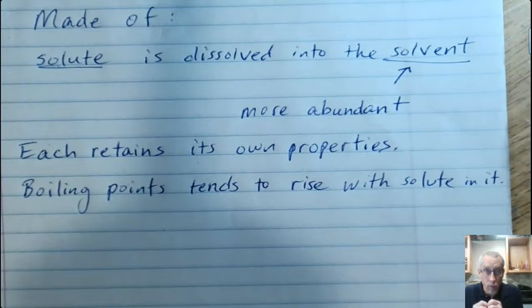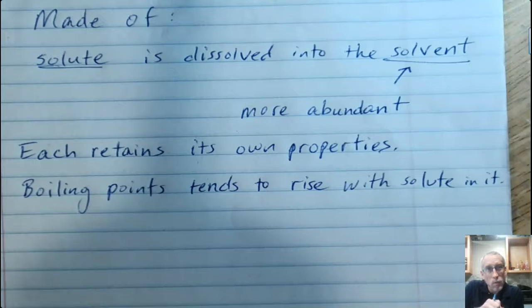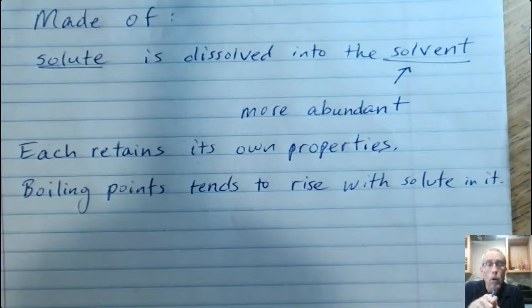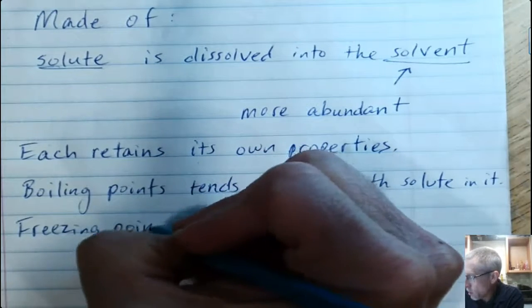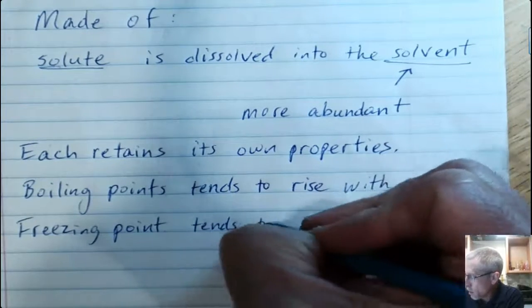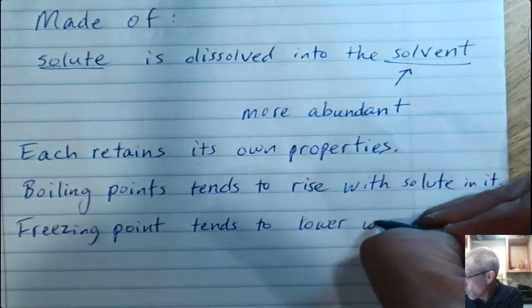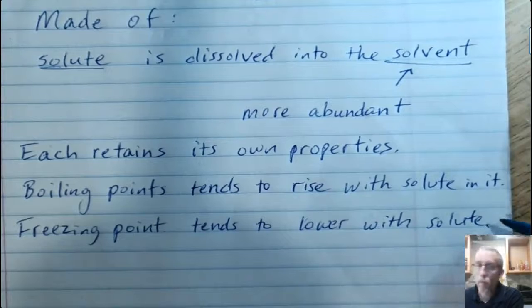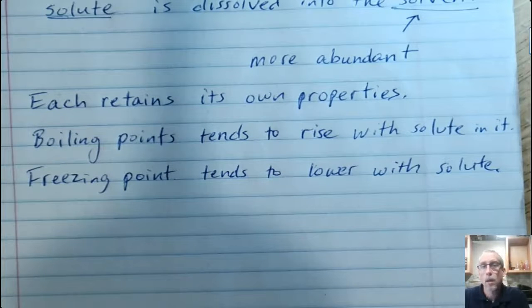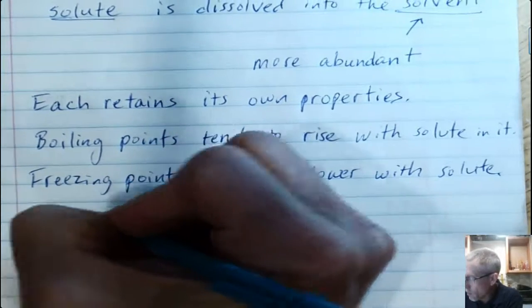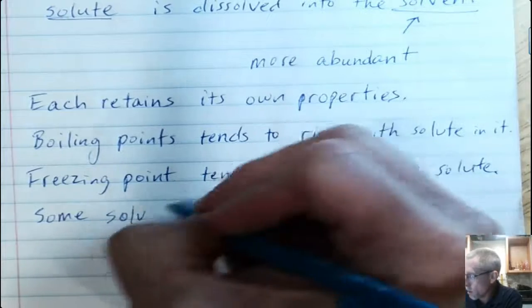Similarly, in order for the water to freeze, and for those things to arrange themselves so that they have a solid now, the particles of the solute also get in the way of that. So you actually have to lower the temperature even more. Freezing points, that's the temperature at which the liquid will freeze, tends to lower when you have a solute in it. That's why we use salt on the roads in the wintertime. It actually lowers the temperature at which that water would freeze. So instead of freezing at maybe 32 degrees Fahrenheit, maybe we can get down to 25 or so, which depending on what the temperature is, that might mean you get to go to school the next day.